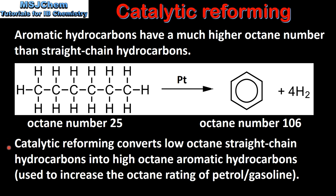To summarize, catalytic reforming converts low octane straight chain hydrocarbons into high octane aromatic hydrocarbons, and this is used to increase the octane rating of petrol or gasoline.